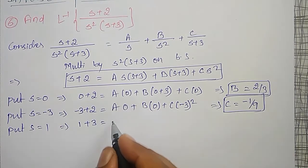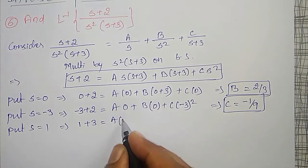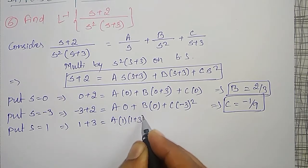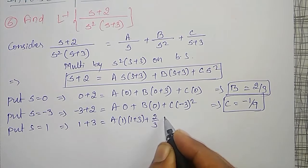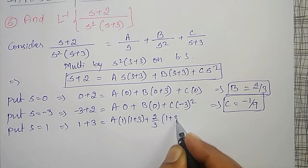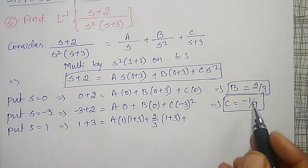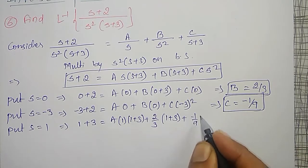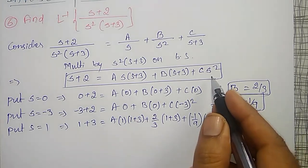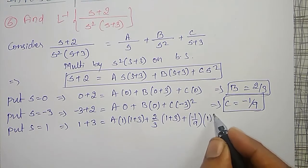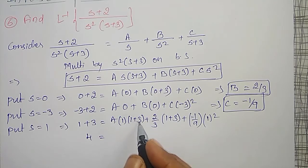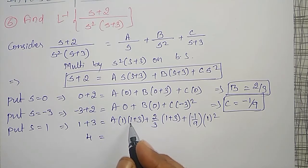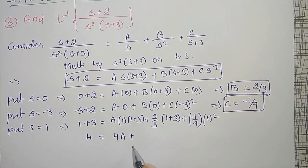With s=1: 1+2 = A·1·(1+3) + B·(1+3) + C·1². That is 3 = 4A + (2/3)·4 + (−1/9)·1. Simplifying: 3 = 4A + 8/3 − 1/9. Taking LCM as 9: 3 = 4A + 24/9 − 1/9.